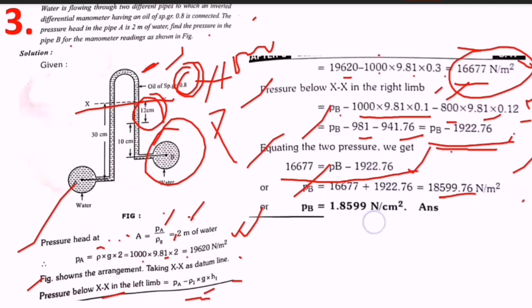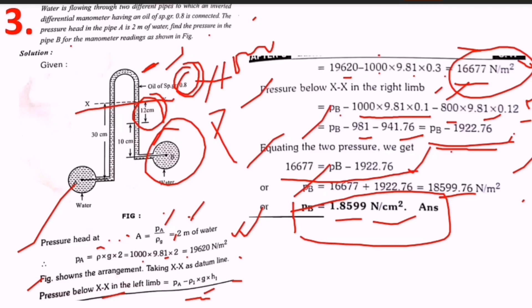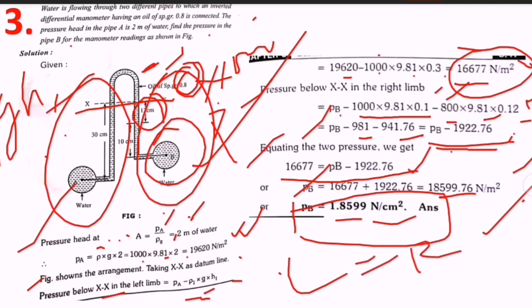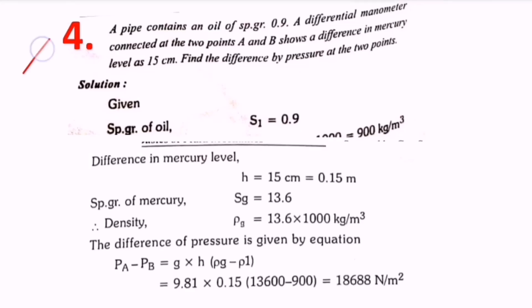Converting: pb equals 1.85 N/cm². The method is: first calculate pressure in the left limb using rho one g h1, then calculate pressure in the right limb, then equate left and right limbs to get the required answer. Next question: a pipe contains oil of specific gravity 0.9, connected to a differential manometer at two points A and B showing a mercury level difference of 15 centimeters.